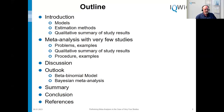Then I will summarize the problems of meta-analysis with very few studies and show some examples. A discussion follows, and before I close with a summary and conclusion, I will also give an outlook regarding other promising methods: the beta-binomial model and Bayesian meta-analysis.